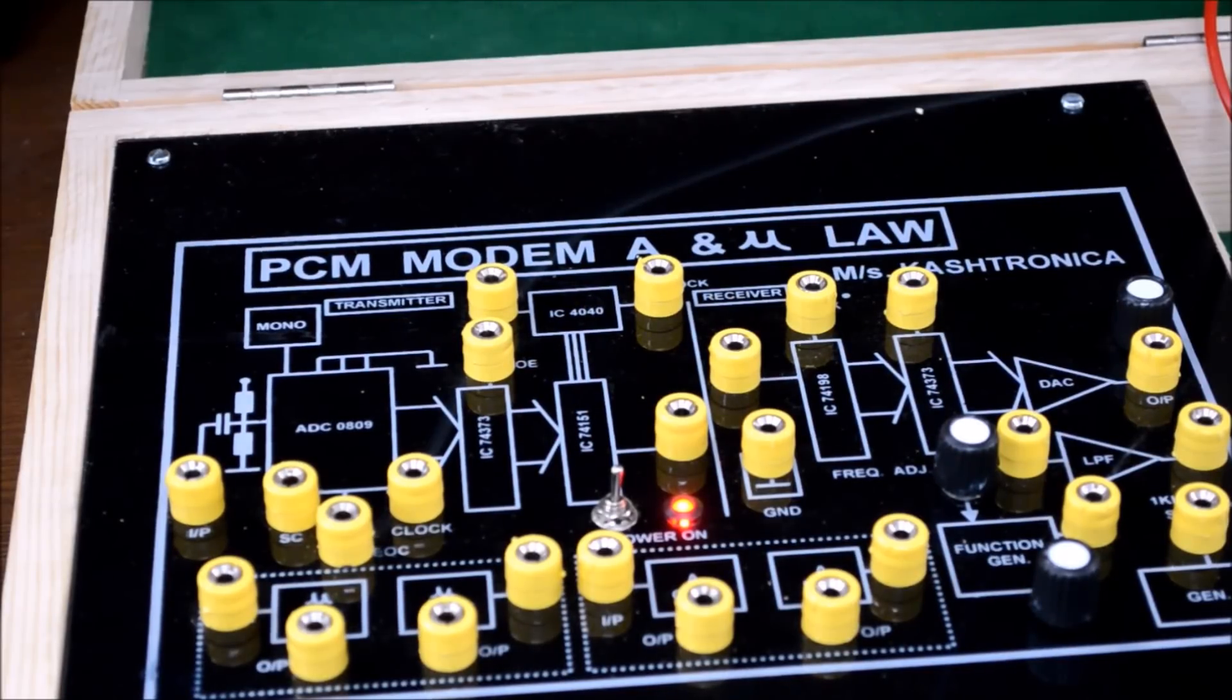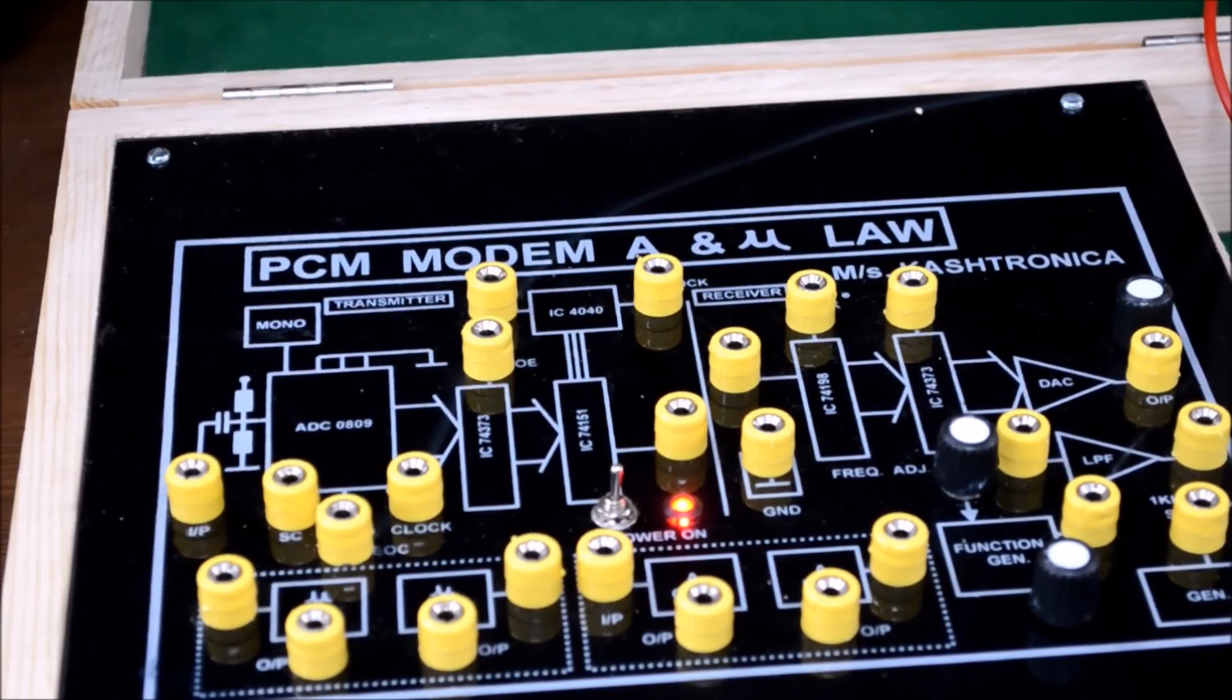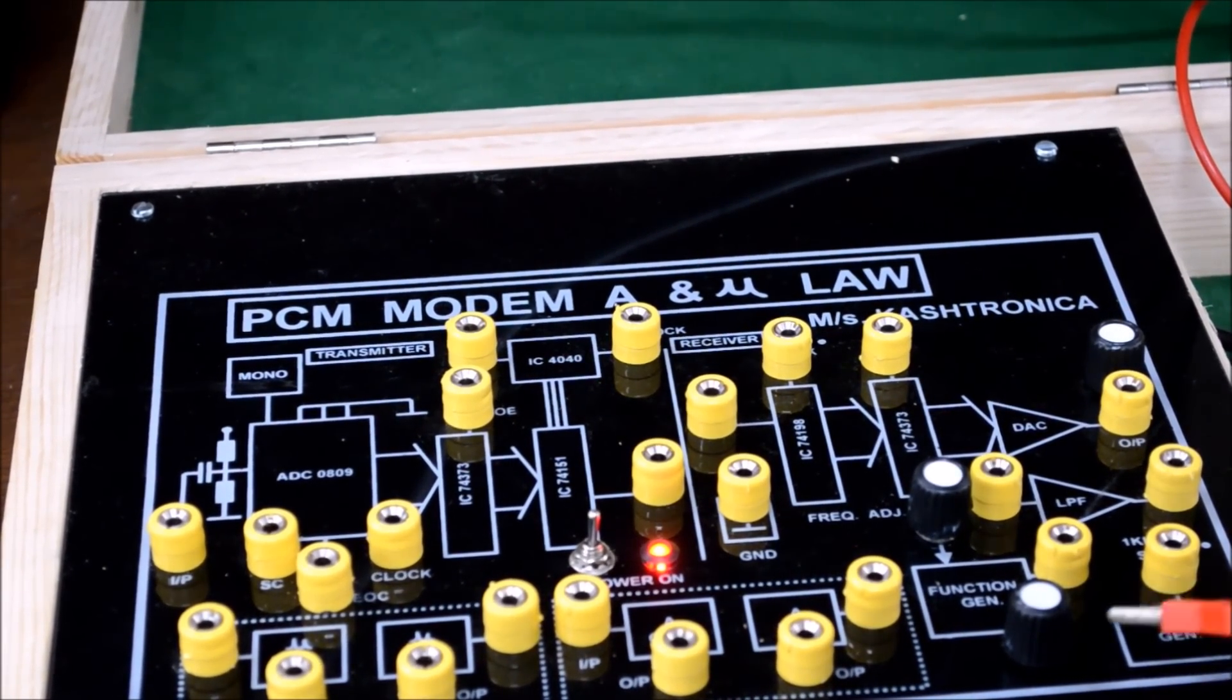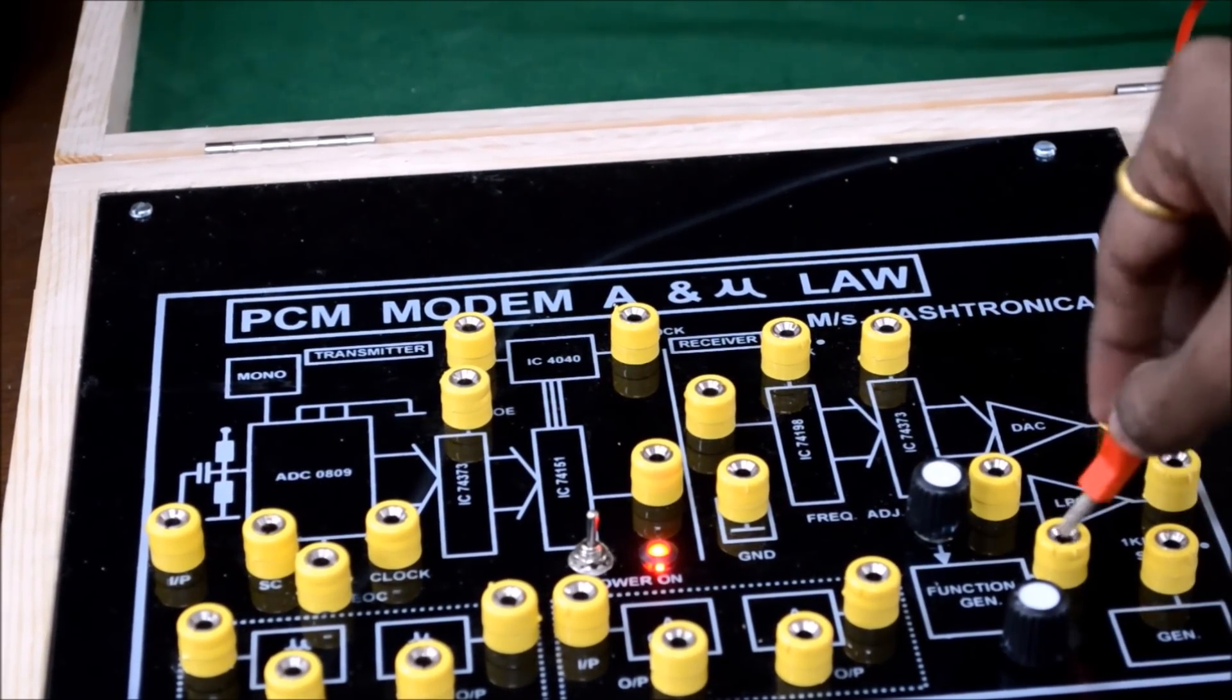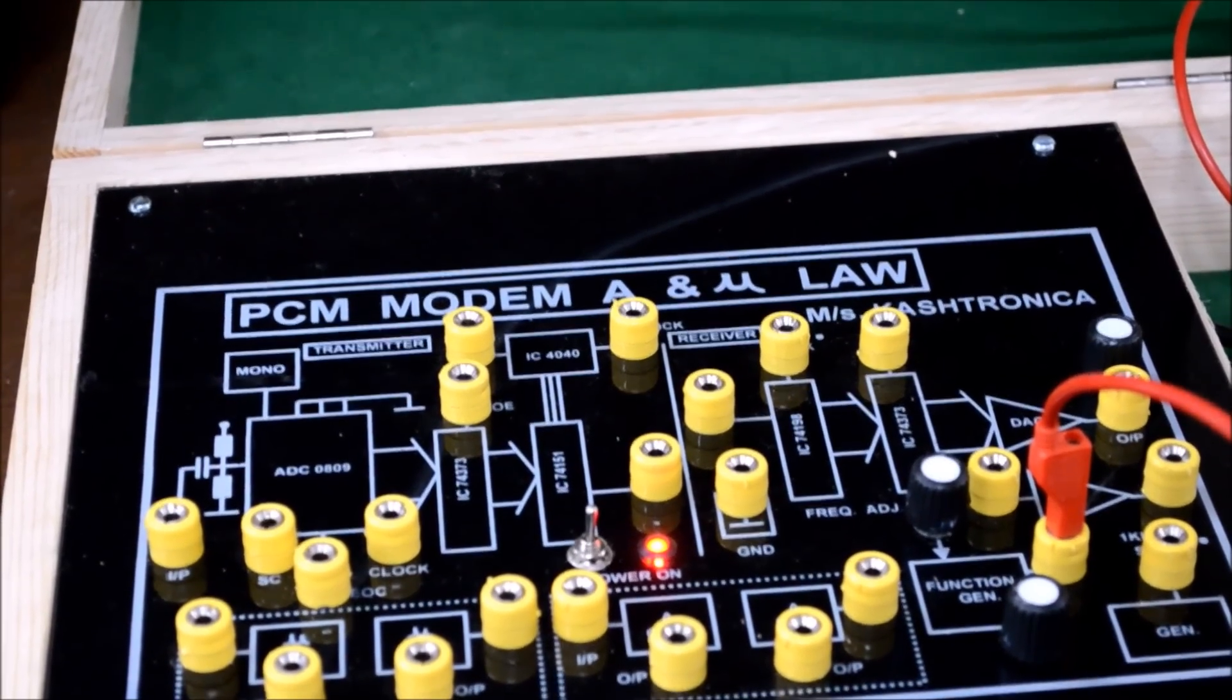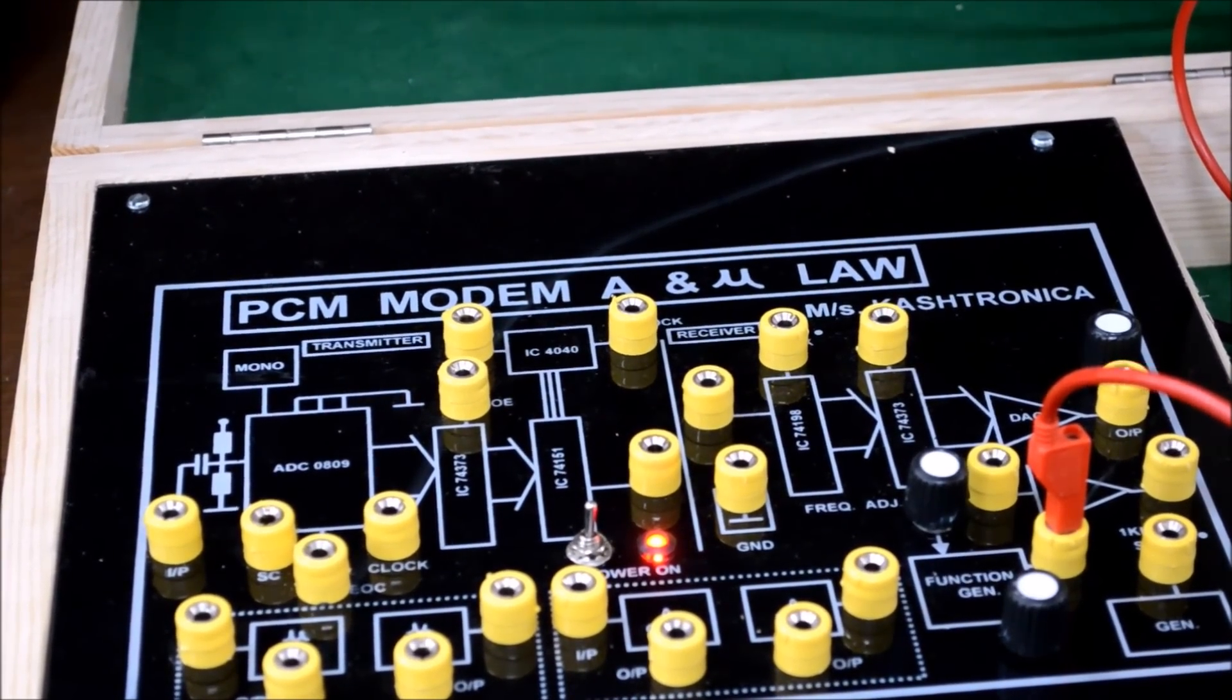Now, we will be looking at the second part of the experiment which is the process of non-linear quantization. In the second part, we will be using the function generator given on the kit. So, just observe the waveform obtained by the function generator and keep the frequency of the system minimum as possible.